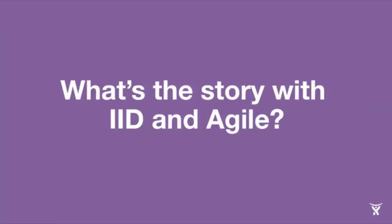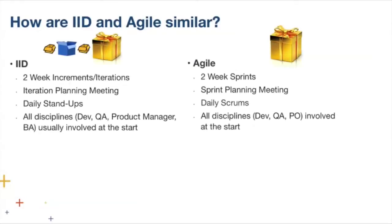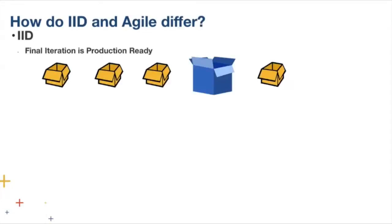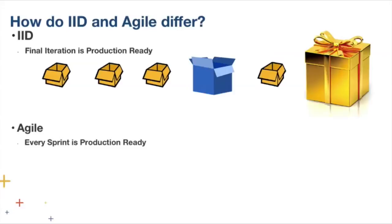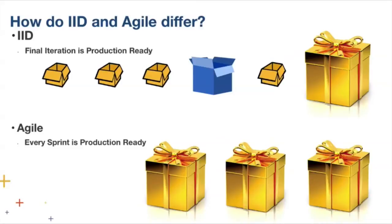You might say IID and agile sound similar — and you're right, there are some similarities: two-week increments versus two-week sprints, iteration planning versus sprint planning, daily stand-ups versus daily scrums, everybody starts around the same time. But that's pretty much where the similarities end. The key difference is that IID focuses on delivering that last build to production, whereas in agile, every build has to be production ready. That is a very different way of working.